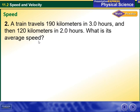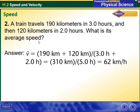Another example: a train travels 190 kilometers in 3 hours and then 120 kilometers in 2 hours. What is the average speed?